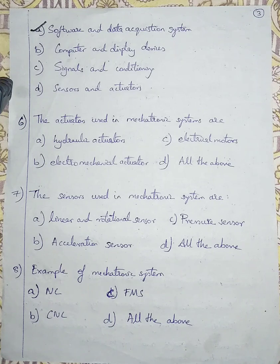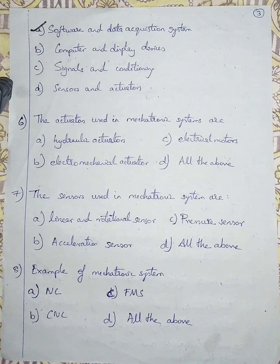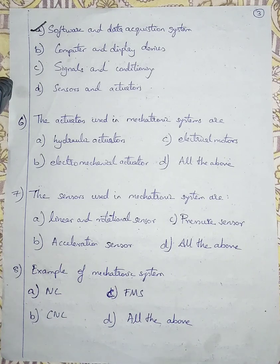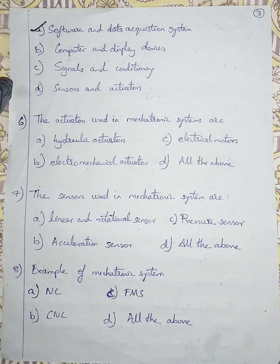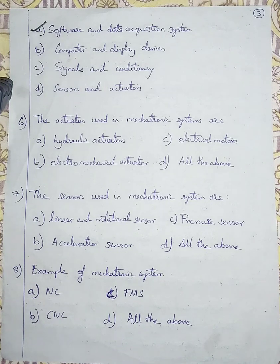Question number 6: The actuators used in mechatronics systems are. Option A is hydraulic actuator. Option B is electromechanical actuator. Option C is electrical motors. Option D is all the above. Actuators are of various kinds — pneumatic, hydraulic, electromagnetic, electromechanical, electrical motors, and pumps. Actuators display motion; they create motion using energy or force. All three options are actuators, so the answer is option D, all the above.